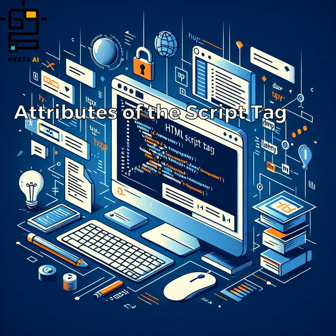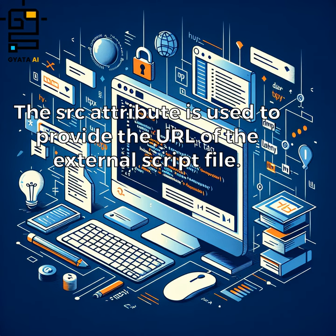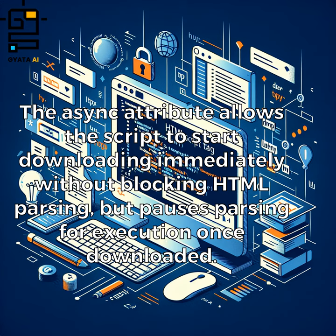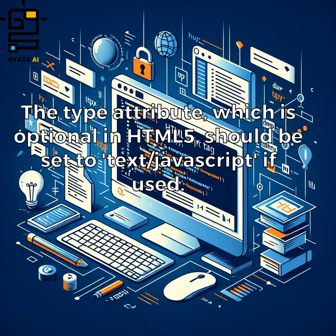The script tag has several attributes controlling how JavaScript is executed. These include async, defer, and type. The SRC attribute is used to provide the URL of the external script file. The async attribute allows the script to start downloading immediately without blocking HTML parsing, but pauses parsing for execution once downloaded. The defer attribute also allows immediate download, but delays execution until after HTML parsing is complete. The type attribute, which is optional in HTML5, should be set to text JavaScript if used.